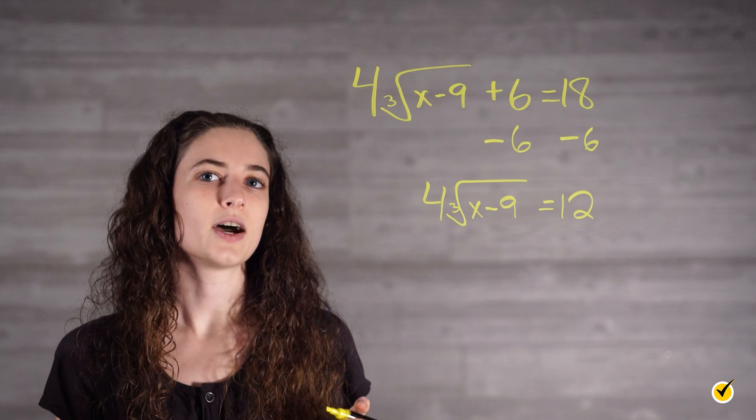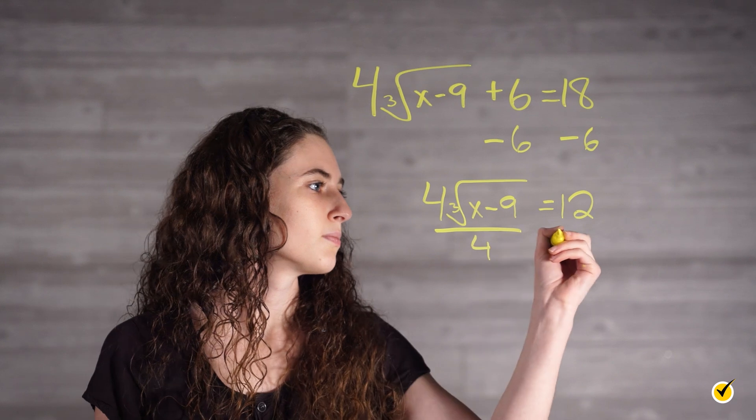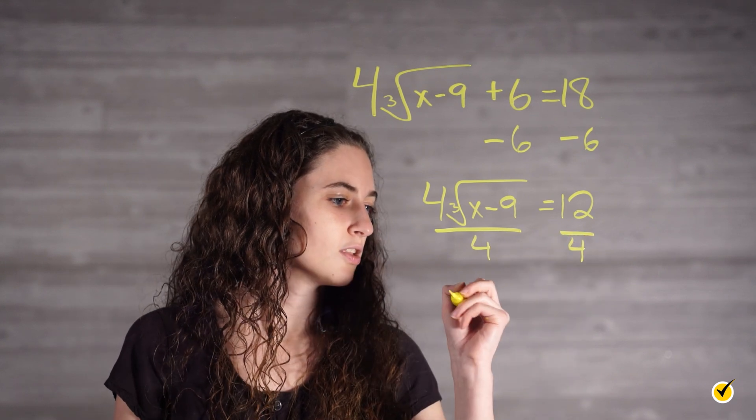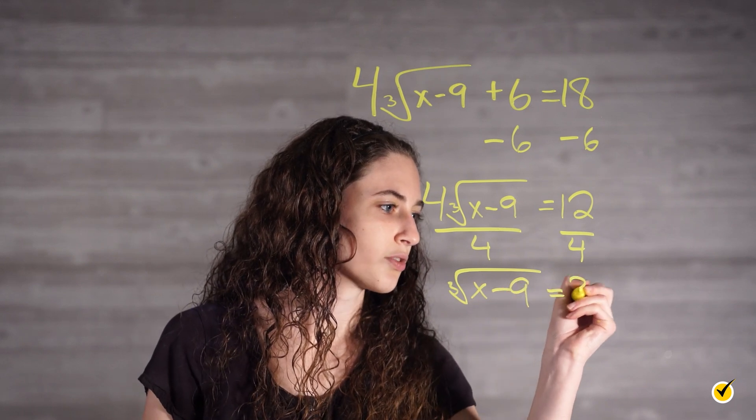Then we want to divide both sides by 4 to get the root by itself. The cube root of x minus 9 is equal to 3.